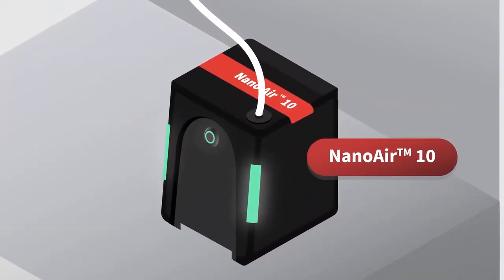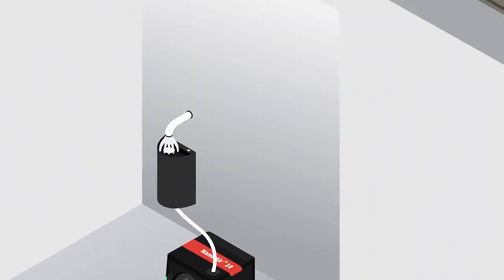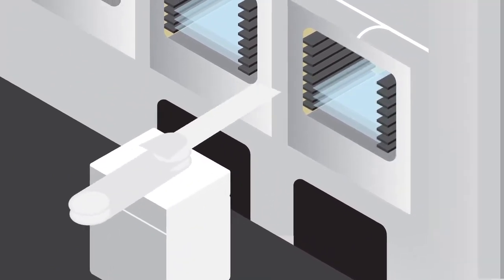NanoAir 10 units are used inside process tools for real-time air monitoring where the wafer is exposed, adding an extra layer of security against contaminants.